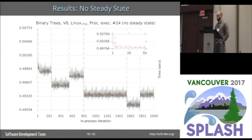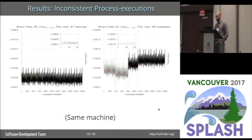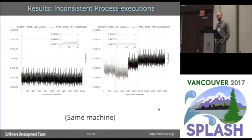Another thing we saw was no steady state, meaning there was a change point in the last 500 iterations of the process execution. This is binary trees on V8 on a Linux machine, classified as no steady state because of a late change point very late in the process execution. Finally, another thing we noticed was a lot of inconsistency in the results. We have two run sequence plots — both for binary trees, both for V8, on the same Linux machine, just repeated. The one on the left shows warm-up, the one on the right shows slow-down. This tells us that if you repeat your experiment, you may not get the same results, which is rather worrying.